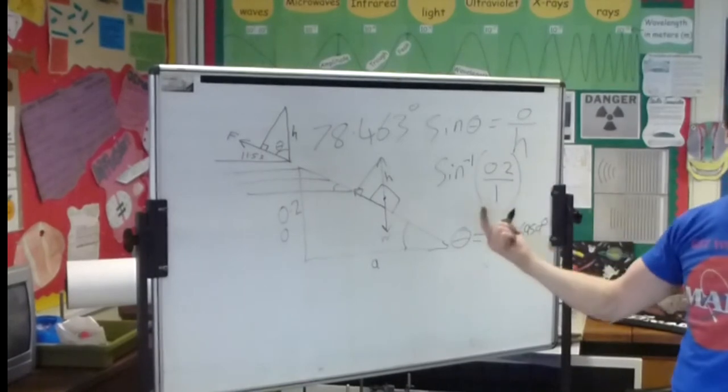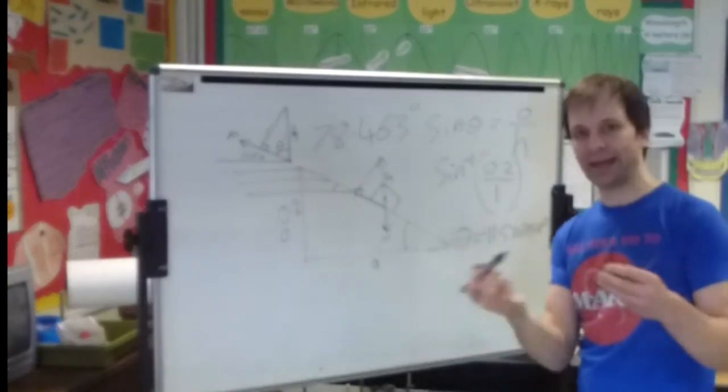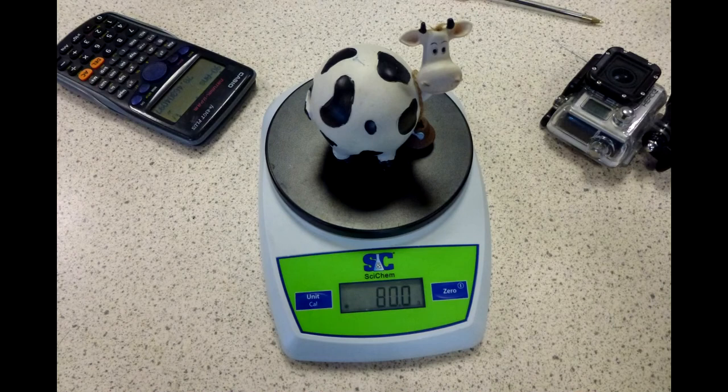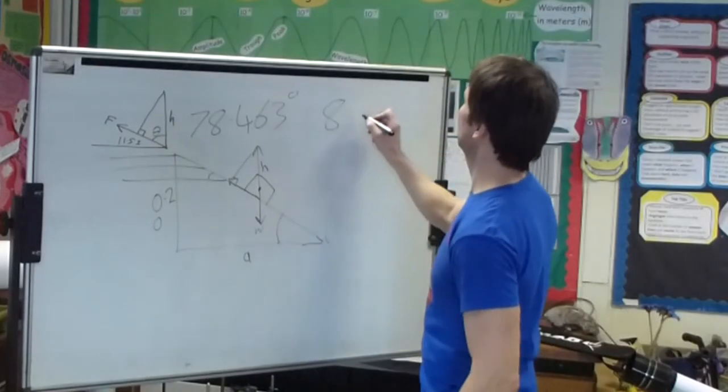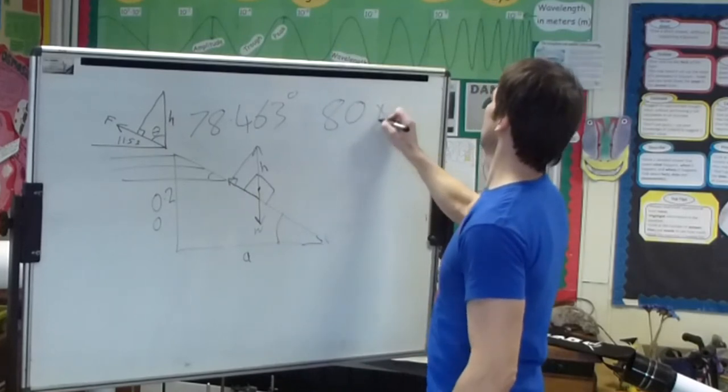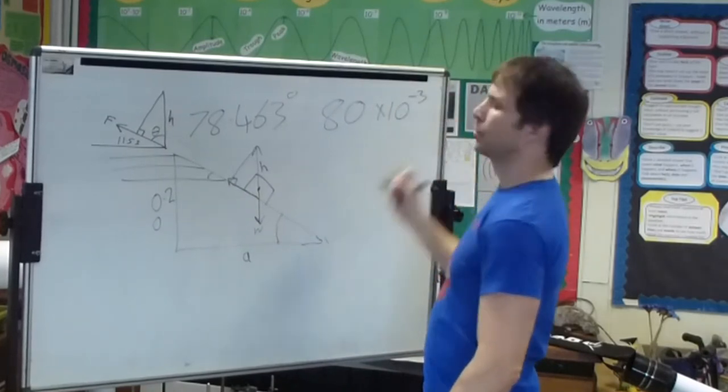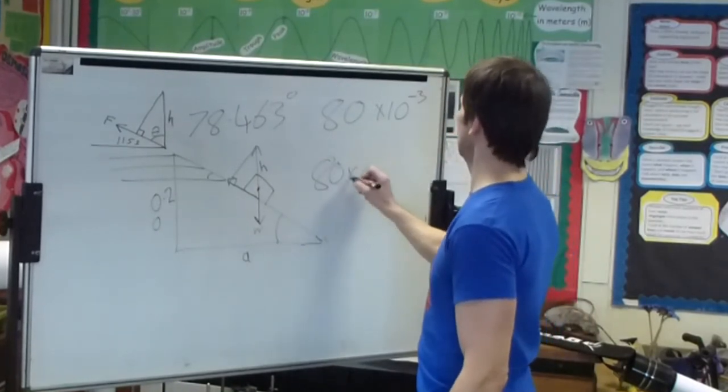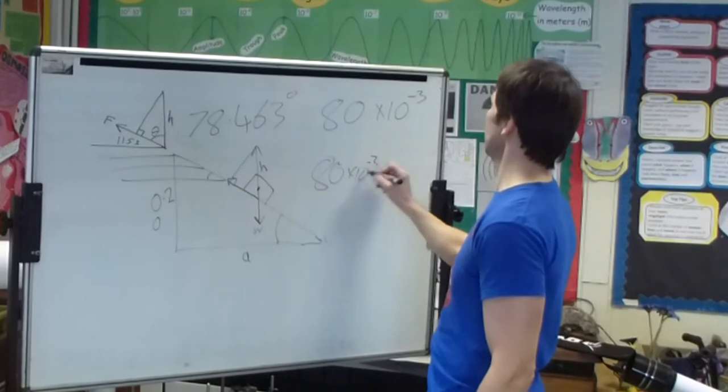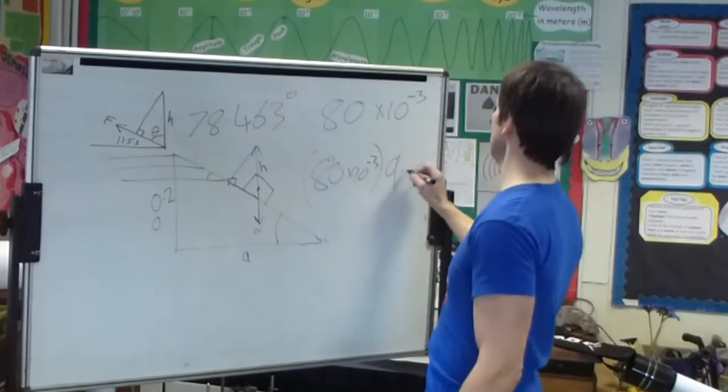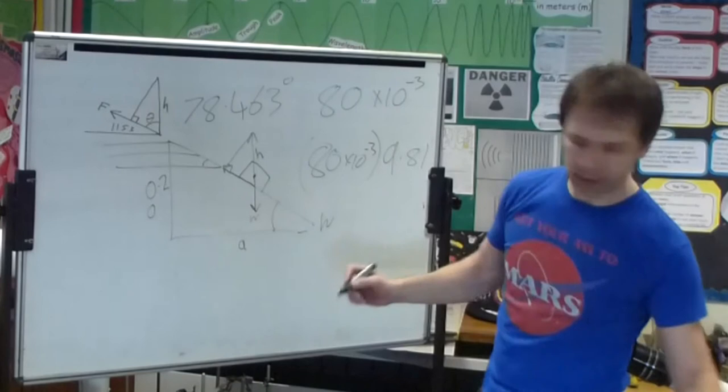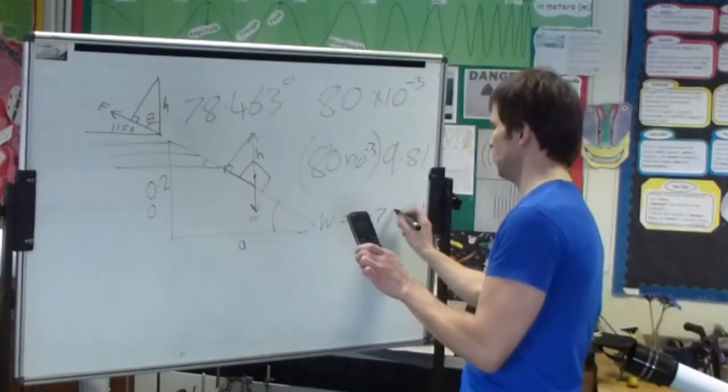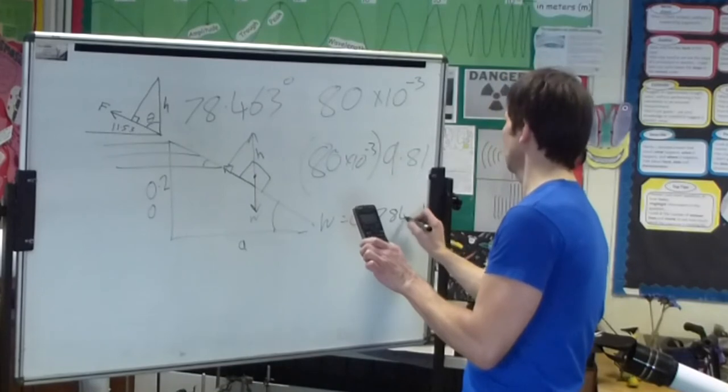Now we just need the value for the weight. The value of that is we get a cow and we measure its mass. So we have an 80 gram cow. Right, so convert that now into a weight force. So that's 80 times 10 to the minus 3 times by 9.81. So the weight force of our cow is 0.7848.